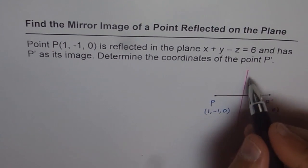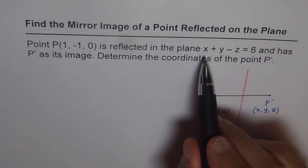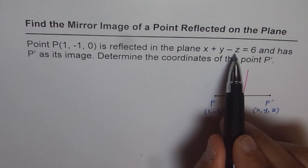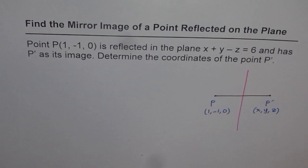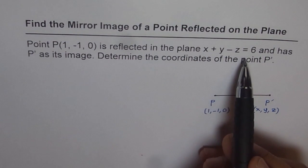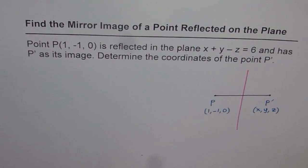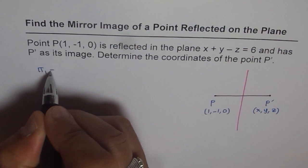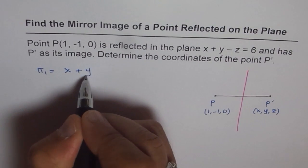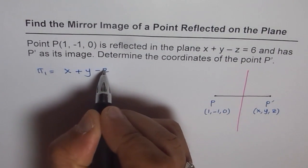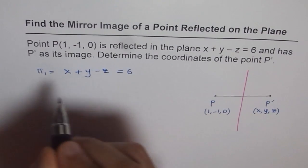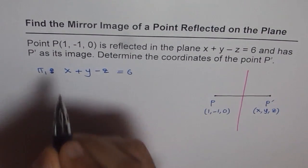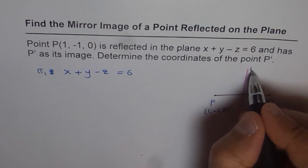So that is the question. The plane is defined by x plus y minus z equals 6. Since we know the plane, we know its normal. Let me write it down. The plane, let's call it pi 1, is x plus y minus z equals 6.